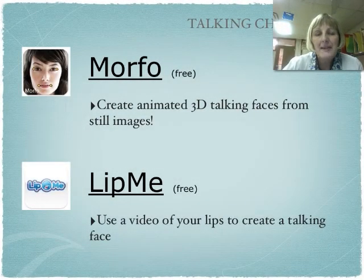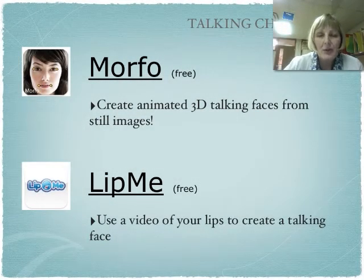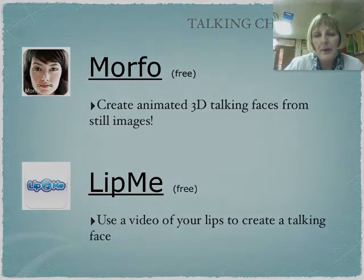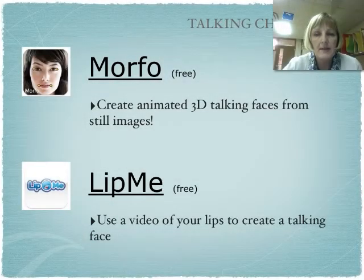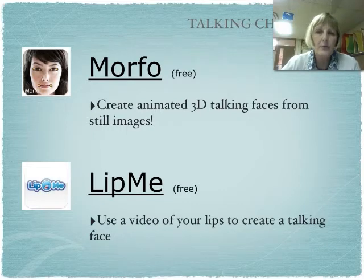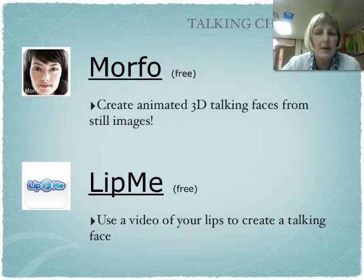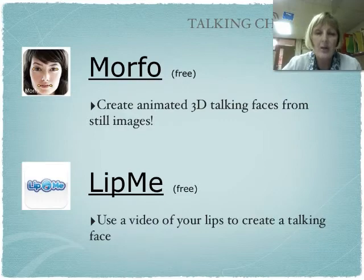There are a couple of other apps you can use for talking characters. One is called Morpho. Morpho is very similar to Face Jack, except you not only locate where the mouth is but also the eyes and a couple of other points on the face. It turns the face into a 3D face where the eyes move and the face moves back and forth. It's a little bit creepy but very cool, and you can do the same kind of talking characters using Morpho, only in 3D.